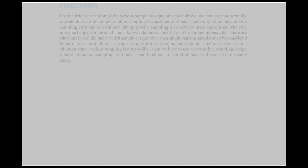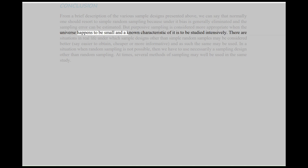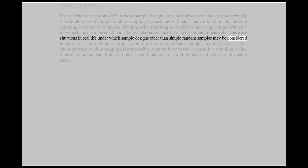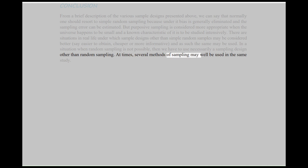Conclusion: From a brief description of the various sample designs presented above, we can say that normally one should resort to simple random sampling because under it bias is generally eliminated and the sampling error can be estimated. But purposive sampling is considered more appropriate when the universe happens to be small and a known characteristic of it is to be studied intensively. There are situations in real life where sample designs other than simple random samples may be considered better — easier to obtain, cheaper, or more informative. In a situation when random sampling is not possible, we have to use necessarily a sampling design other than random sampling. At times, several methods of sampling may well be used in the same study.